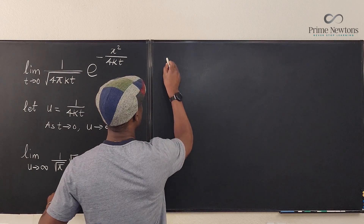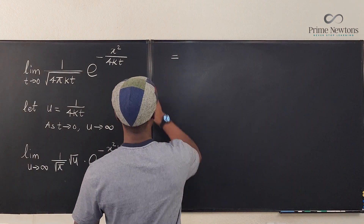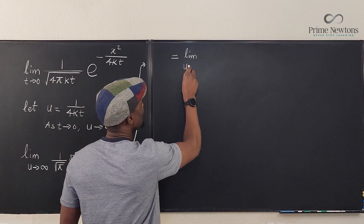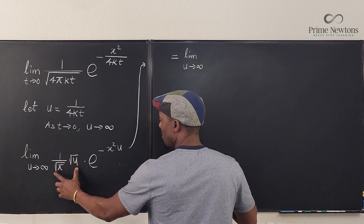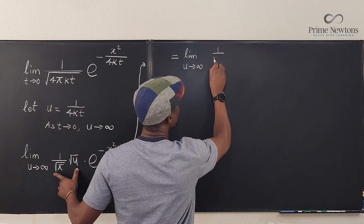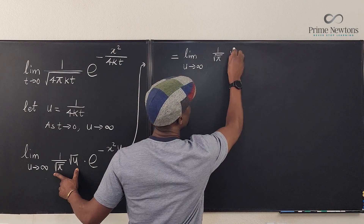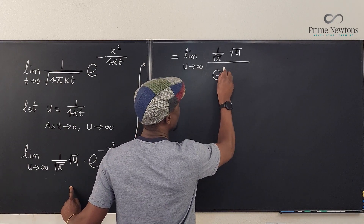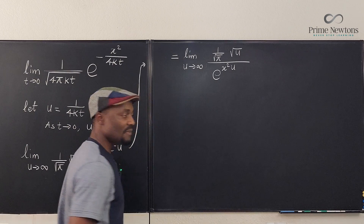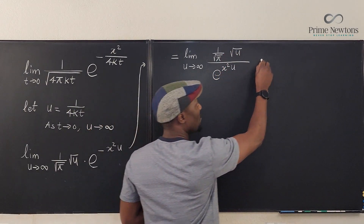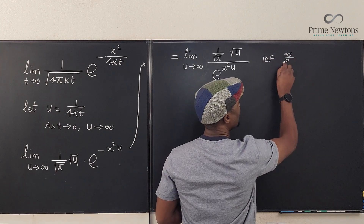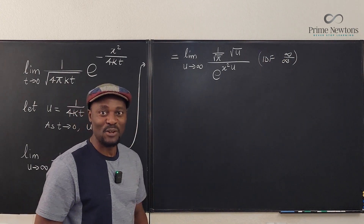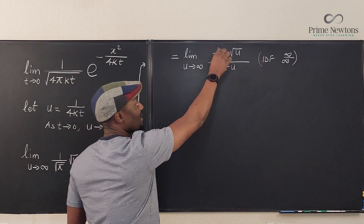If we push e to the negative x squared u down to the denominator, it becomes e to the x squared u, which goes to infinity. So we can rewrite the limit as the limit as u goes to infinity of one over the square root of π times the square root of u, divided by e to the x squared u. Now this is the indeterminate form infinity over infinity, so we can apply L'Hôpital's rule.